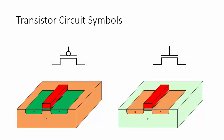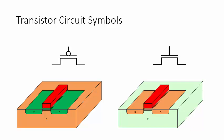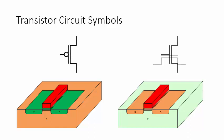These symbols represent the NMOS and PMOS transistors in schematic diagrams. Each symbol shows the insulated gate and the source and drain terminals connected. The symbols are often turned on their sides. A low voltage or logic 0 turns on a PMOS transistor,